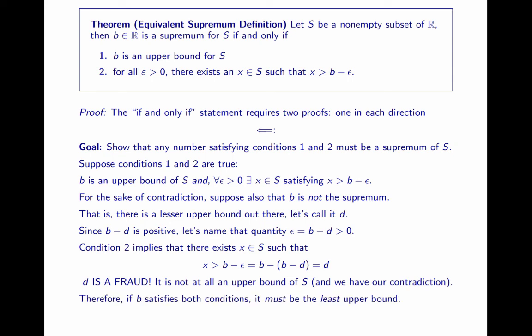D purports to be a lesser upper bound, but X is an element in my set greater than D. D is a fraud — it is not at all an upper bound of S. And of course, we have our contradiction. Therefore, if B satisfies both conditions, it must be the least upper bound of all upper bounds, and we've shown our result. So we now axiomatically have the real line. The real line satisfies the axioms of an ordered field and the least upper bound property. Now that we've built it, what can we do with it? Well, so much. To find out more, stay tuned for lecture three. That's all for today.